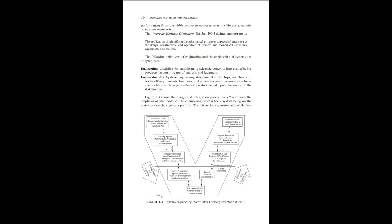Performance concerns from the 1970s evolved to concerns over the life cycle, namely concurrent engineering. The American Heritage Dictionary defines engineering as: the application of scientific and mathematical principles to practical ends such as the design, construction, and operation of efficient and economical structures, equipment, and systems. The following definitions are adopted here. Engineering: a discipline for transforming scientific concepts into cost-effective products through the use of analysis and judgment. Engineering of a system: an engineering discipline that develops, matches, and trades off requirements, functions, and alternate system resources to achieve a cost-effective life-cycle-balanced product based upon the needs of the stakeholders.